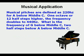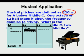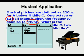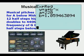Now for our musical application. Musical pitches are defined as 220 hertz for A below middle C. One octave, or 12 half steps higher, the frequency doubles to 440 hertz. What is the frequency of G below middle C, which is two half steps below A below middle C? We go to Stat Edit and enter at 0.0 — A below middle C — 220 cycles per second, and at 12 half steps higher, 440 hertz. We find the relationship by going to Stat Calc 0, Enter twice.